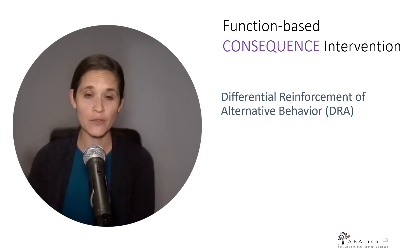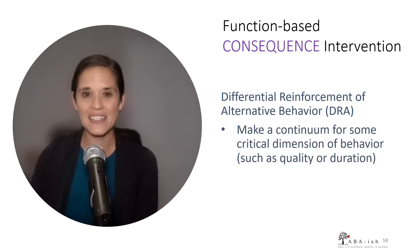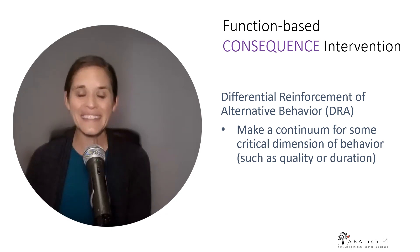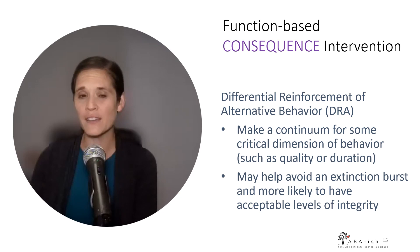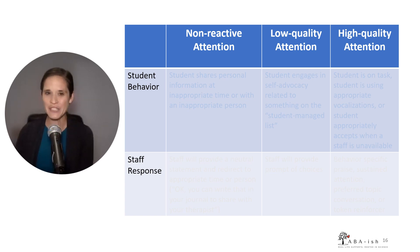Now, we can do differential reinforcement without extinction. And one of the ways I like to do that is to make a continuum for some critical dimension of behavior, such as quality or duration, that shows people how to be differential, even if true extinction is never in place. And I'm going to give you guys an example of this so you can see. But just as a clear overview, why this might help is because it can avoid an extinction burst, because we are giving a little bit of the consequence, even for inappropriate behavior. And therefore, we're more likely to have acceptable levels of integrity, because caregivers are not expected to manage a large burst of behavior.